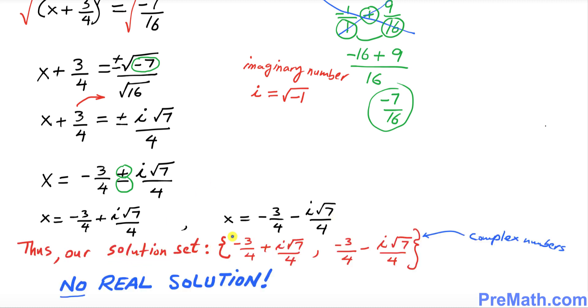Thus our solution set turns out to be these both solutions I put together. And as you can see, both of these solutions have i, imaginary number, that means they are complex numbers. So that means they are not real numbers. So that means we don't have any real solutions. Thanks for watching, and please don't forget to share and subscribe my channel for more exciting videos.